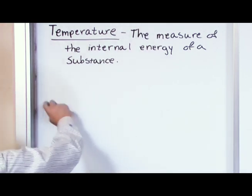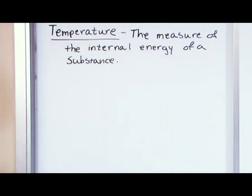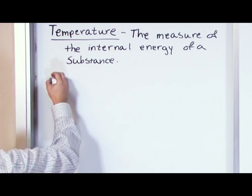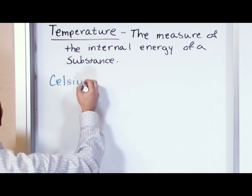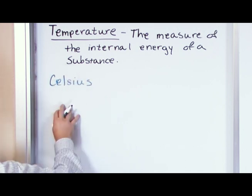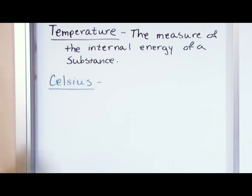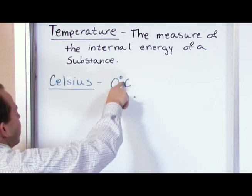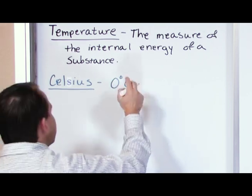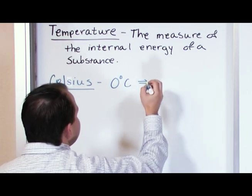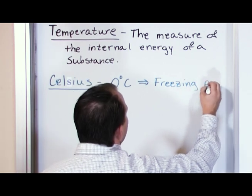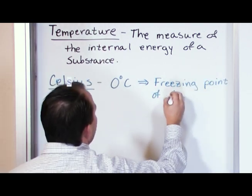How do we measure it? We know we measure it with a thermometer and a temperature scale. The main temperature scale that we use in chemistry, at least right now, is the Celsius scale, and it's really convenient. Zero degrees Celsius — this is a degree symbol — zero degrees Celsius is by definition assigned to be the freezing point of water.